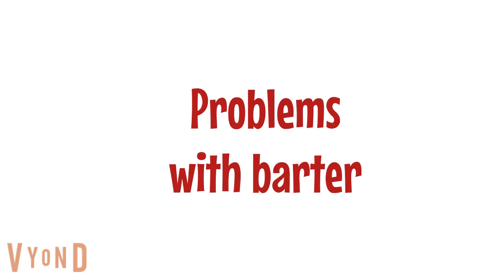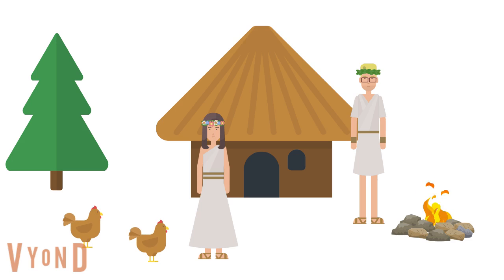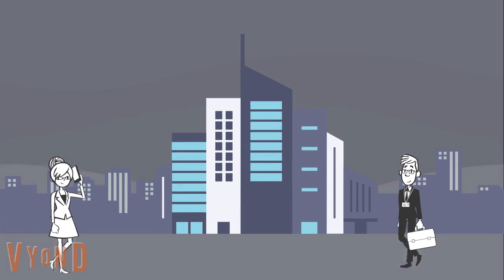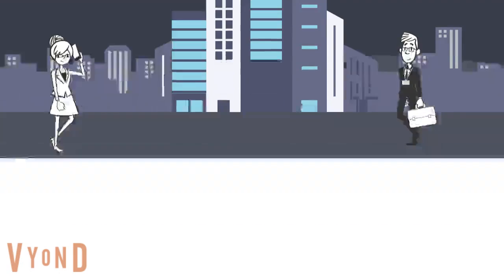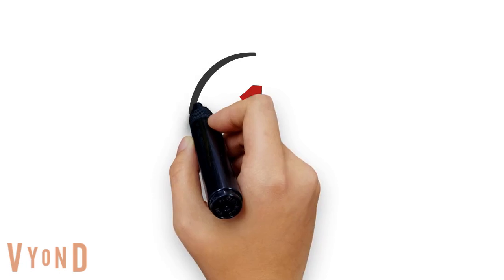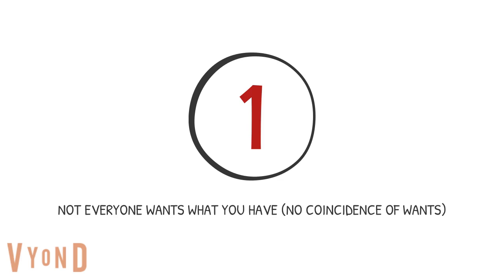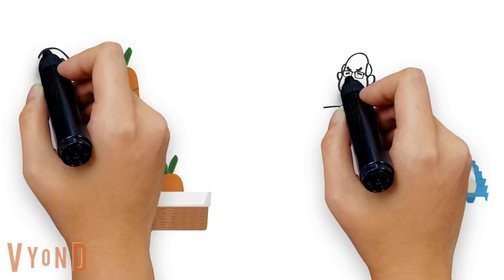There are some problems with barter. Barter worked in small societies and tribes, but as the economy got larger and more connected, barter became more difficult. For instance, with barter, you need a double coincidence of wants. That means the person who has what you want also needs to want what you have.